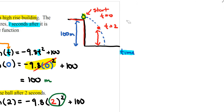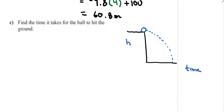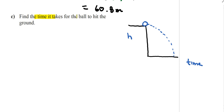Going back to the diagram, after 2 seconds the x variable is 2 and the height is 60.8 meters — that's the answer for 16b. For 16c, the question asks for the time it takes for the ball to hit the ground. Looking at the diagram, after some time the ball hits the ground, and we need to recognize that when it hits the ground, the height equals 0.